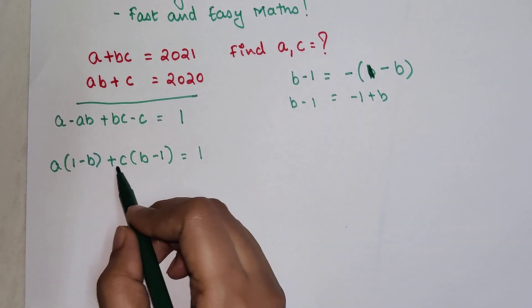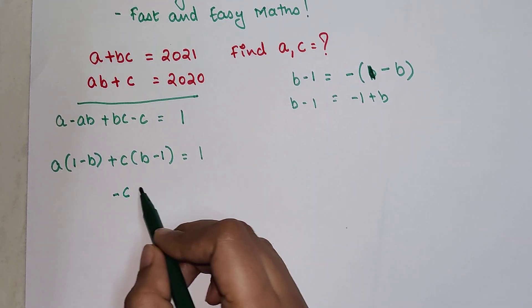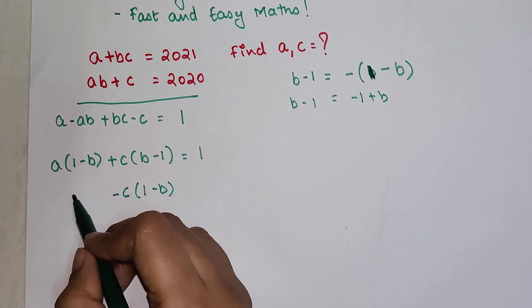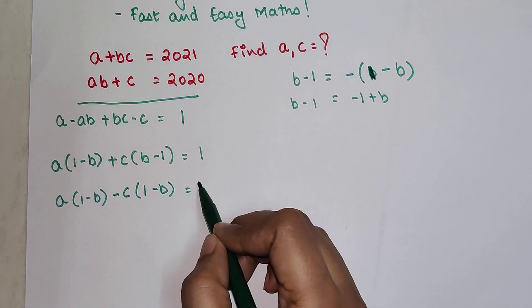So here what I can do is instead of taking plus C outside I will just make it minus C and make this bracket also 1 minus B and here also I have 1 minus B and A equals 1.